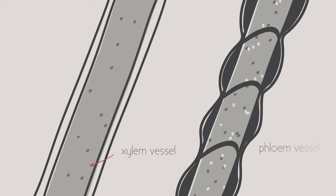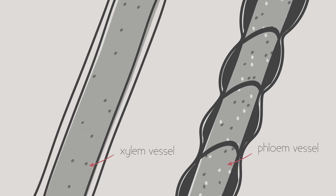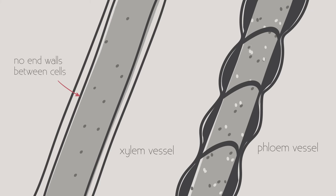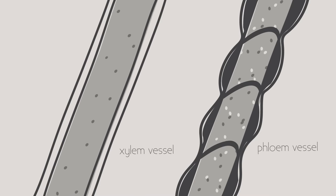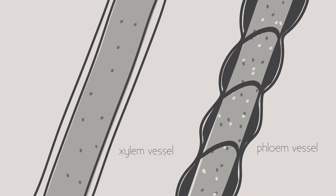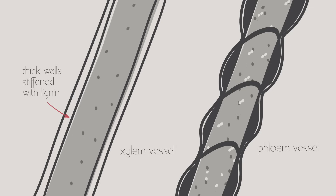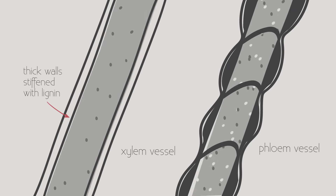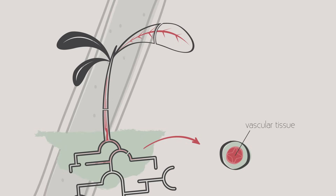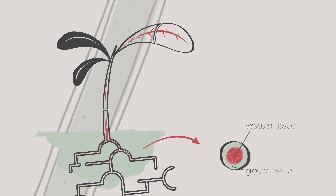Both the xylem and the phloem are made up of rows of cells that form a continuous tube running the whole length of the plant. The xylem vessels are made of elongated dead cells that are impermeable to water and have walls containing lignin, a woody material. Because of this, xylem vessels are tough, which is why the vascular bundles in the roots are in the center — they help prevent the plant being pulled out of the ground and are also more protected in the center.